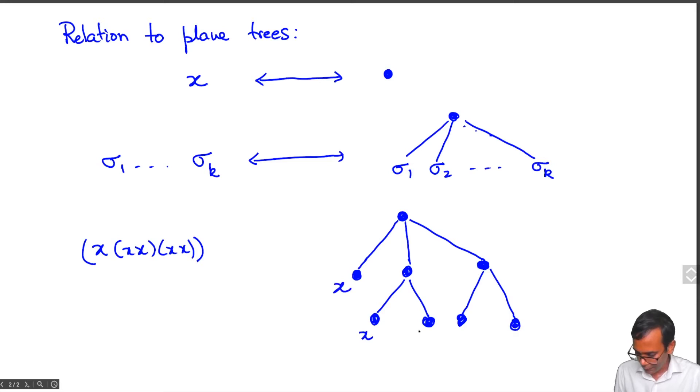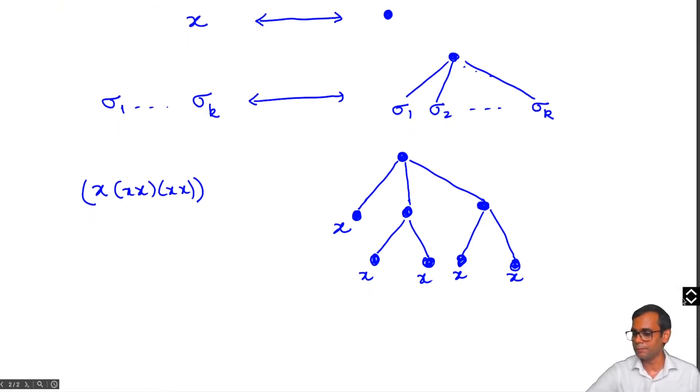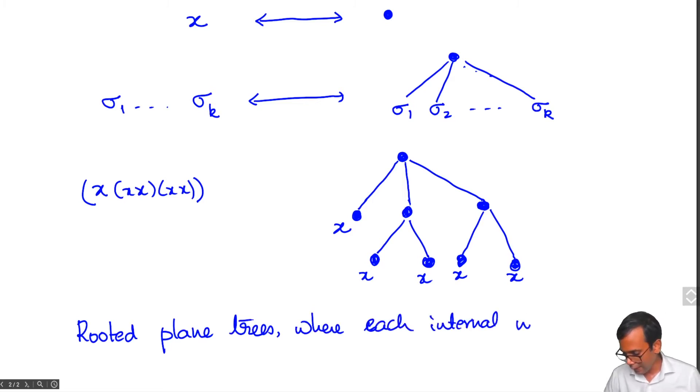You can think of the individual x's as being the leaves of this plane tree. You can go back from this plane tree to the bracketing by bracketing these 2 x's together, then these 2 x's together, and at each level of the tree you put together the symbols starting with the leaves. In particular, you get rooted plane trees where each internal node has at least 2 children.